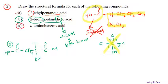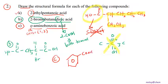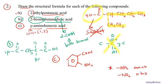Question 2c: 'ortho' (o-) represents positions 1 and 2, and the compound is aminobenzoic acid. The parent is benzoic acid — a hexagon ring with COOH attached. The second carbon gets an amino group (NH₂). Just as a reminder: NH₂ as a substituent is called amino, while NO₂ is called nitro.